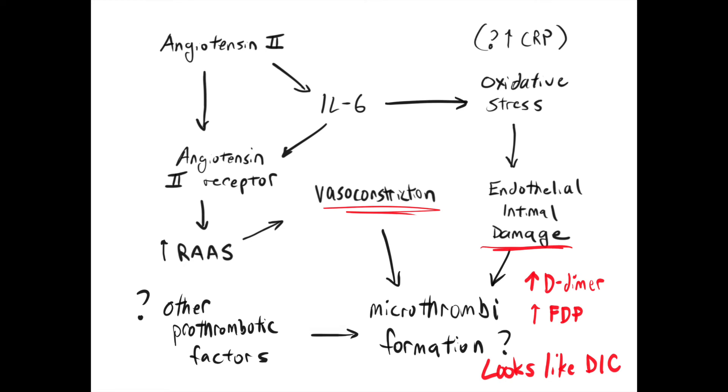So, vasoconstriction from RAS, endothelial intimal damage from IL-6, and propensity for microthrombus formation in a DIC-like pattern. That's the takeaway I personally get from this, the microscopic level.